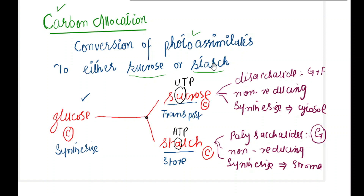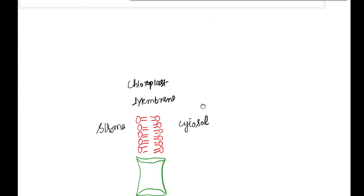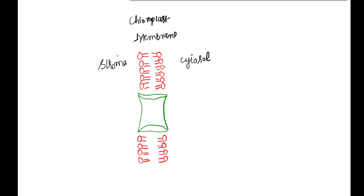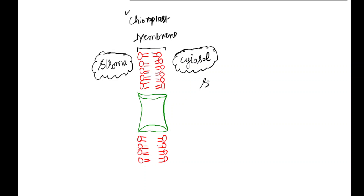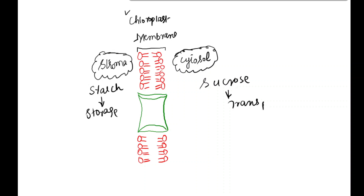If we look at the cell components: one is called the stroma part. Stroma is the fluid portion of the chloroplast, and here we have the cytosol. Cytosol is where sucrose is made, and stroma is where starch is made. Sucrose is the transport form of carbon and starch is the storage form. Transport occurs through the phloem.